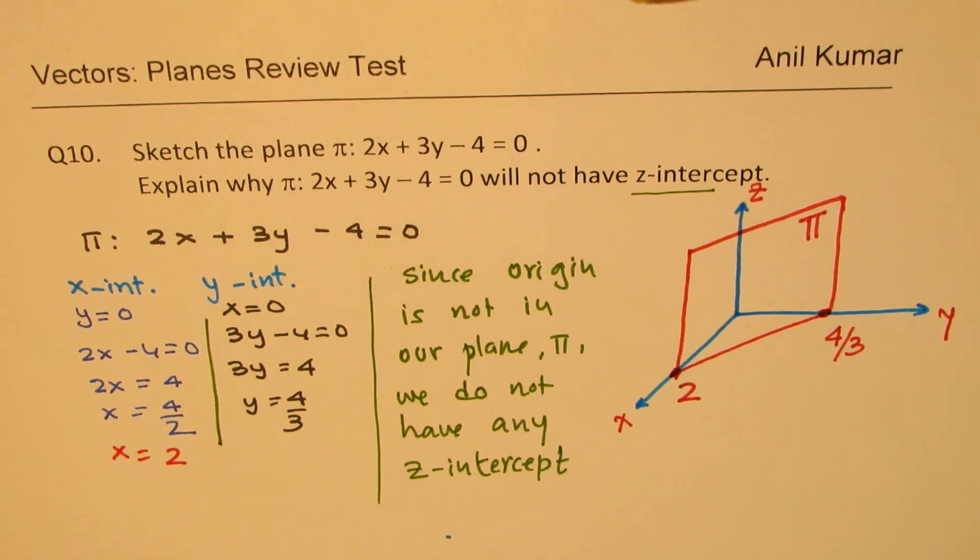Perfect. So that is how it should be looking. As if the table is the xy plane for us, and something, a book standing on it, placed as shown here, represents the plane. And that book could extend in all the directions.